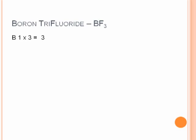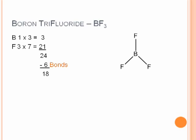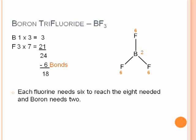For boron trifluoride: boron has three valence electrons for a contribution of three. Three fluorines times seven valence electrons gives a total of twenty-one. Adding that up, we get twenty-four total valence electrons. Drawing in our skeleton, we have three bonds connecting boron to each fluorine, corresponding to six electrons. Twenty-four minus six leaves eighteen. Evaluating the octet rule, each fluorine needs six, and if boron were to obey the octet rule, it would need two. The tendency might be to form a double bond, but boron violates the octet rule, so we're not going to do that.